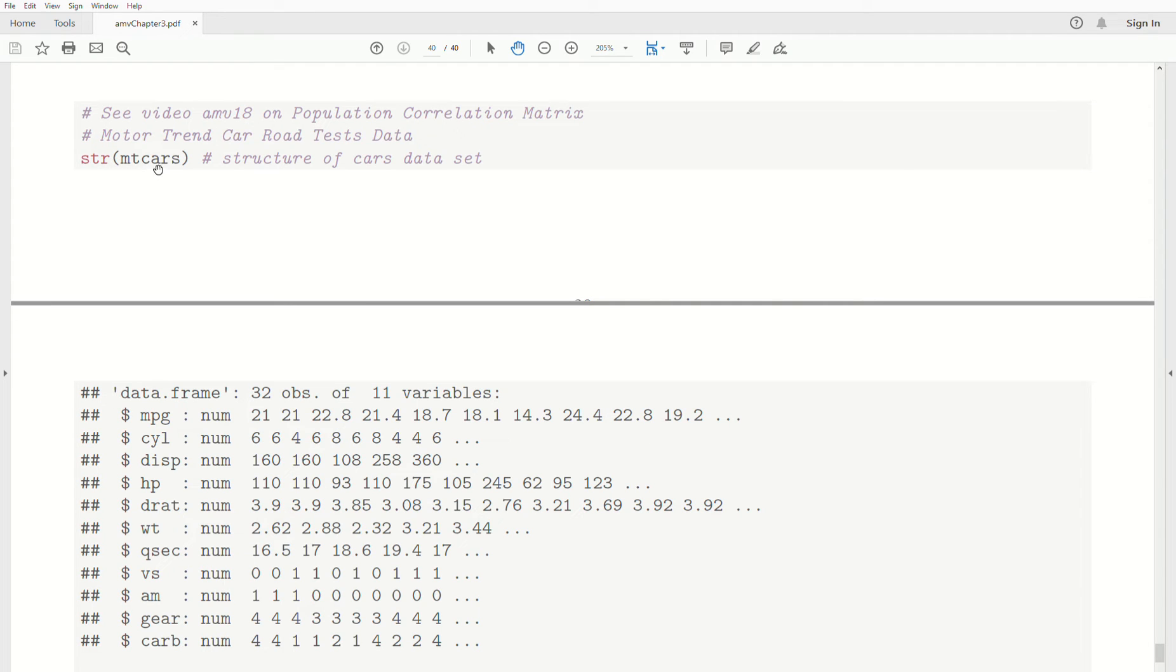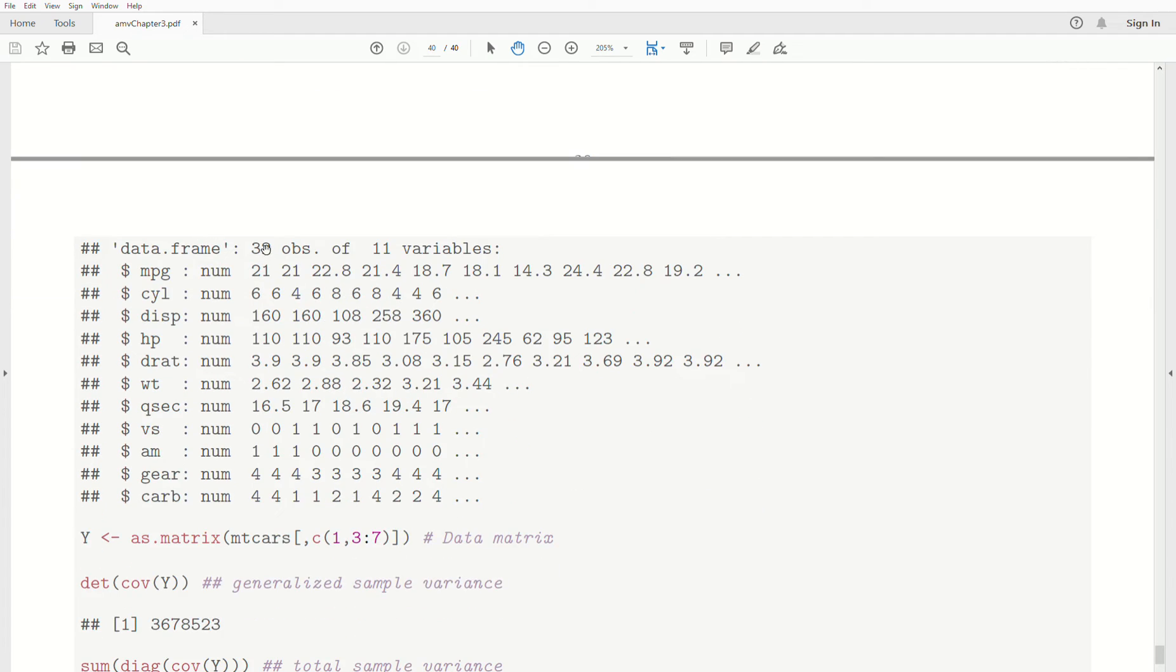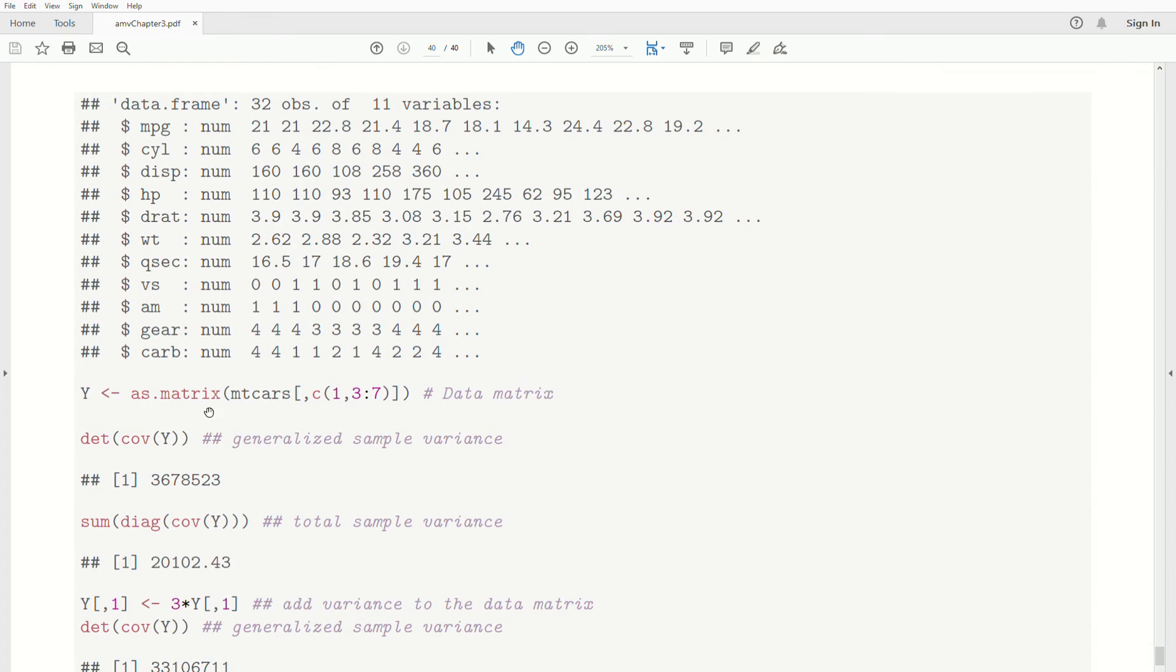A quick R illustration. Let's look at the motor trend car road test data. It's a data frame that contains 32 observations, 11 variables. It's the fuel consumption and characteristics about the cars. What we do is we create a data matrix from the data frame. And I only take columns 1, 3, 4, 5, 6, and 7 because they're the most continuous like.